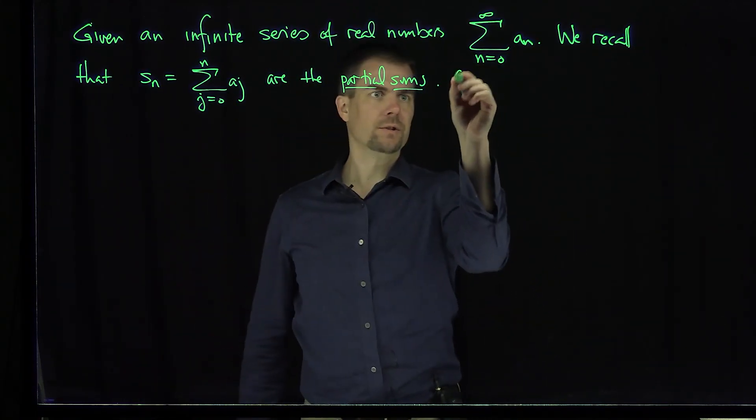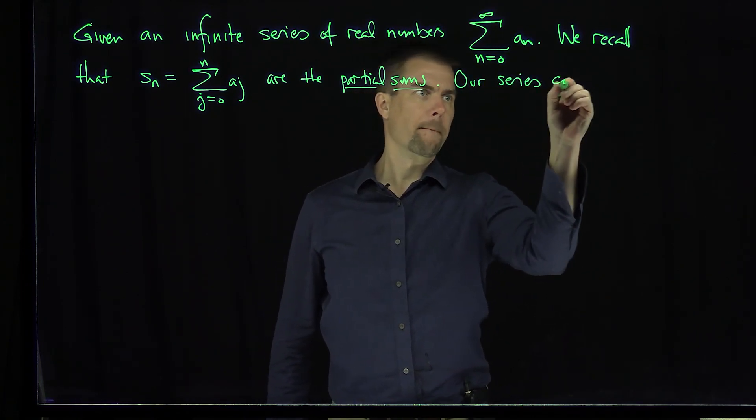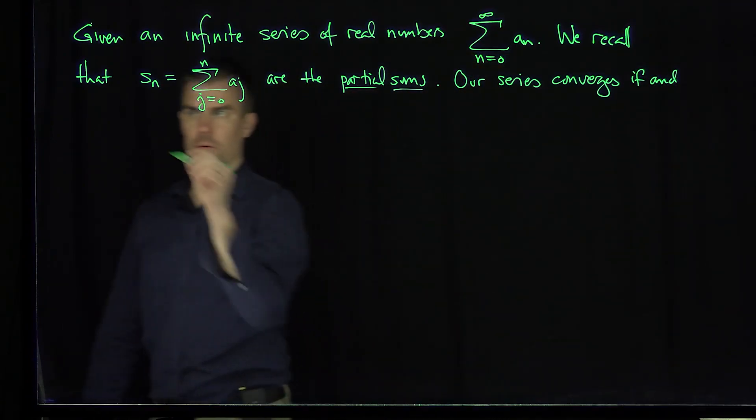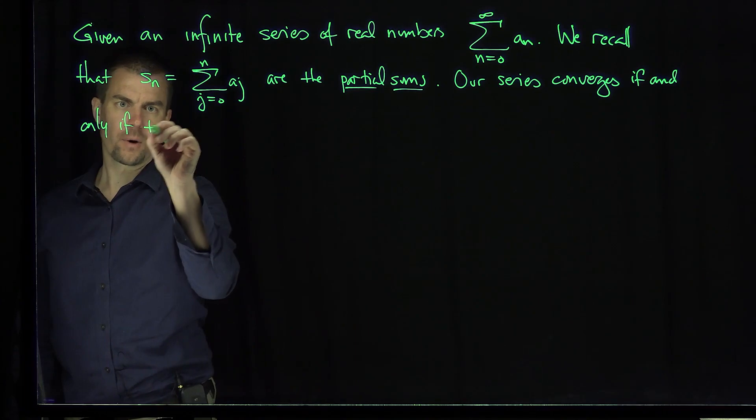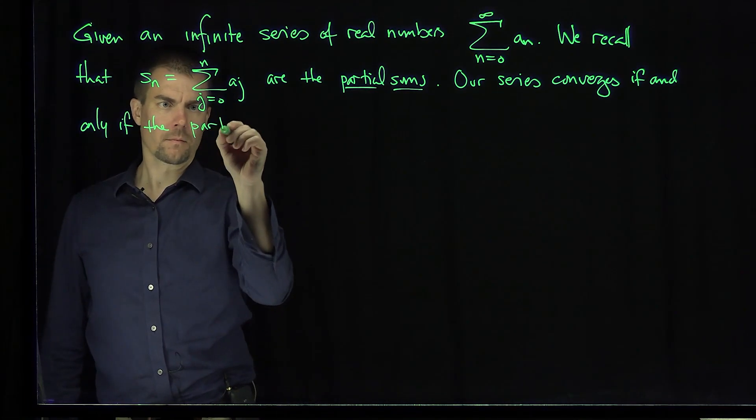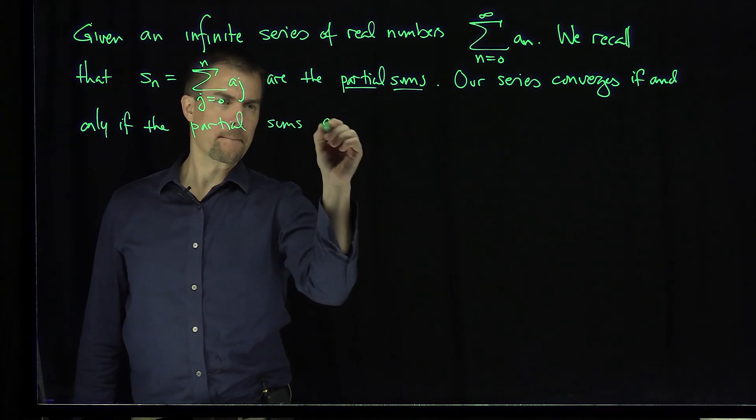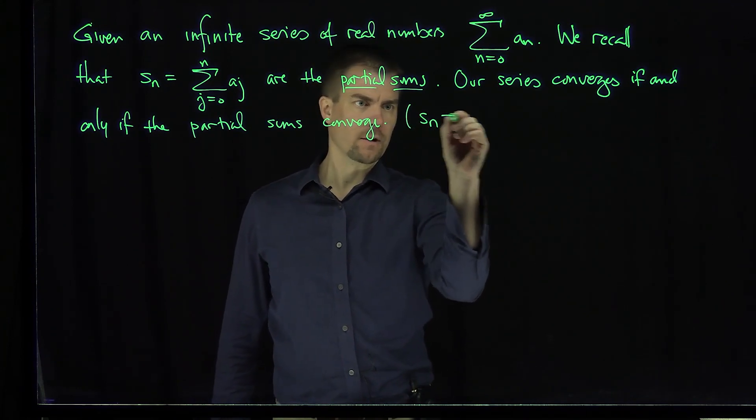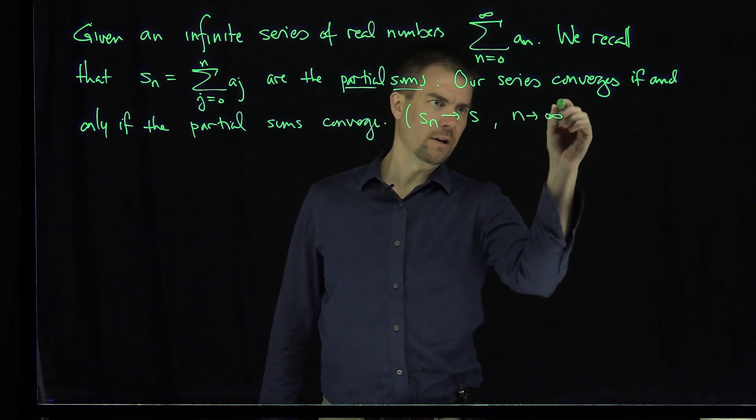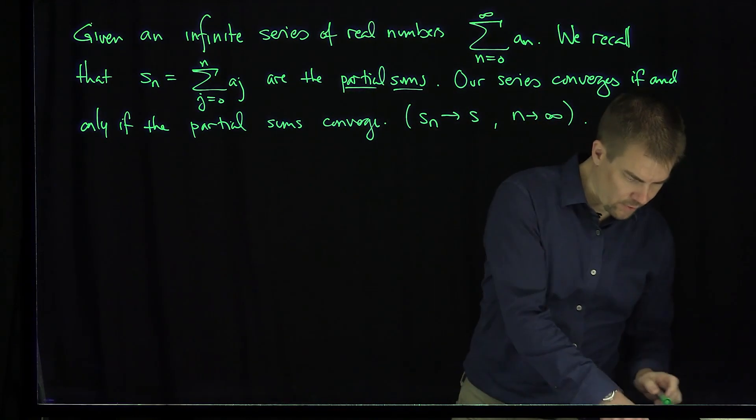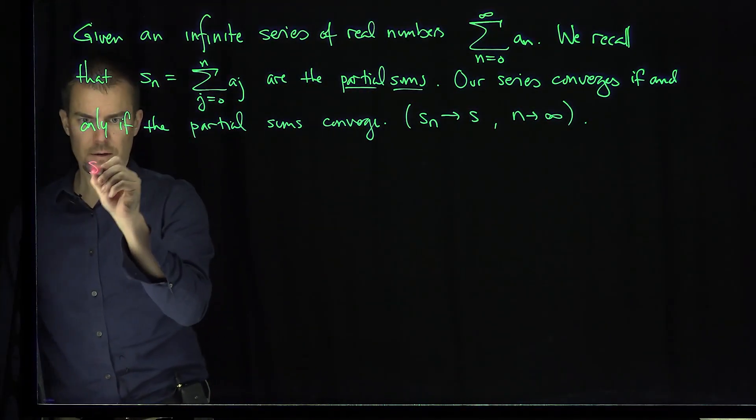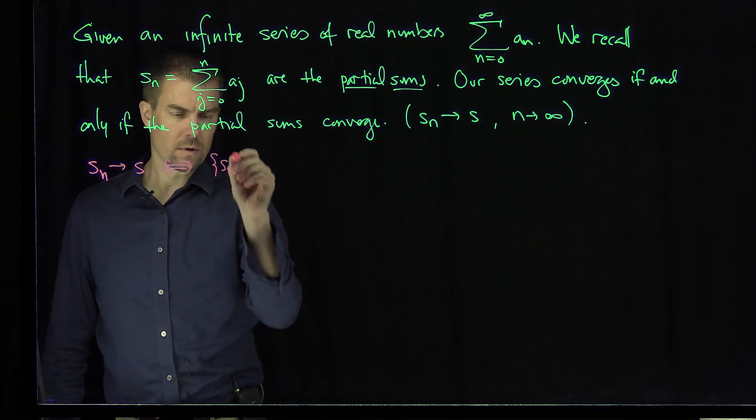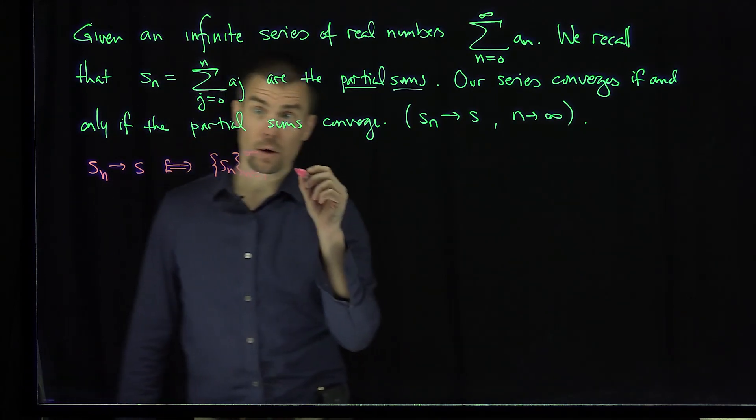And we know the series converges if and only if the partial sums converge. That is, this means that s_n converges to some number s as n tends to infinity. Now, we know from a previous video that for real numbers, s_n converges to s is equivalent to the sequence of partial sums being a Cauchy sequence.